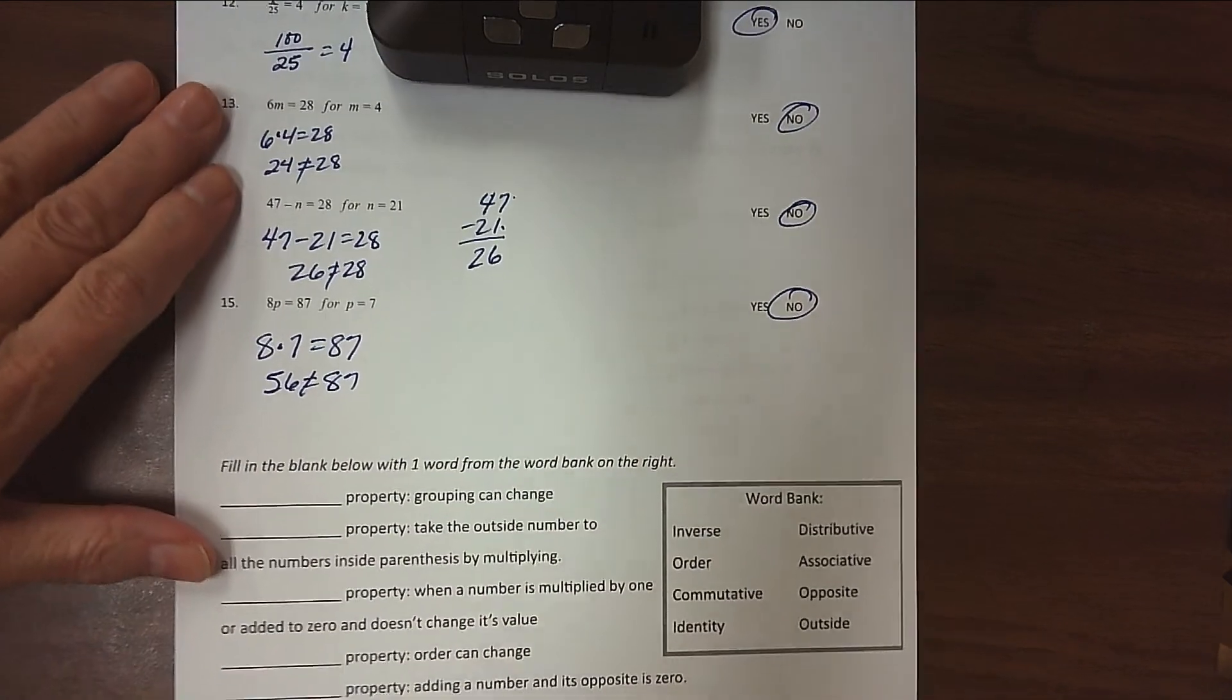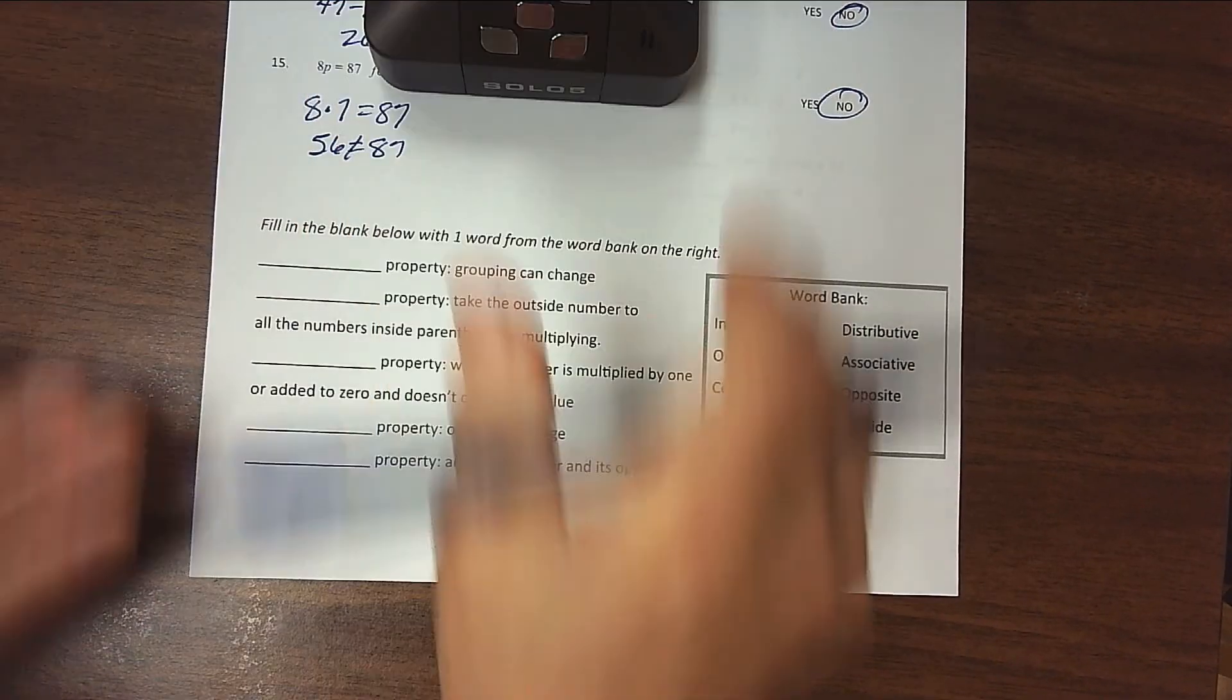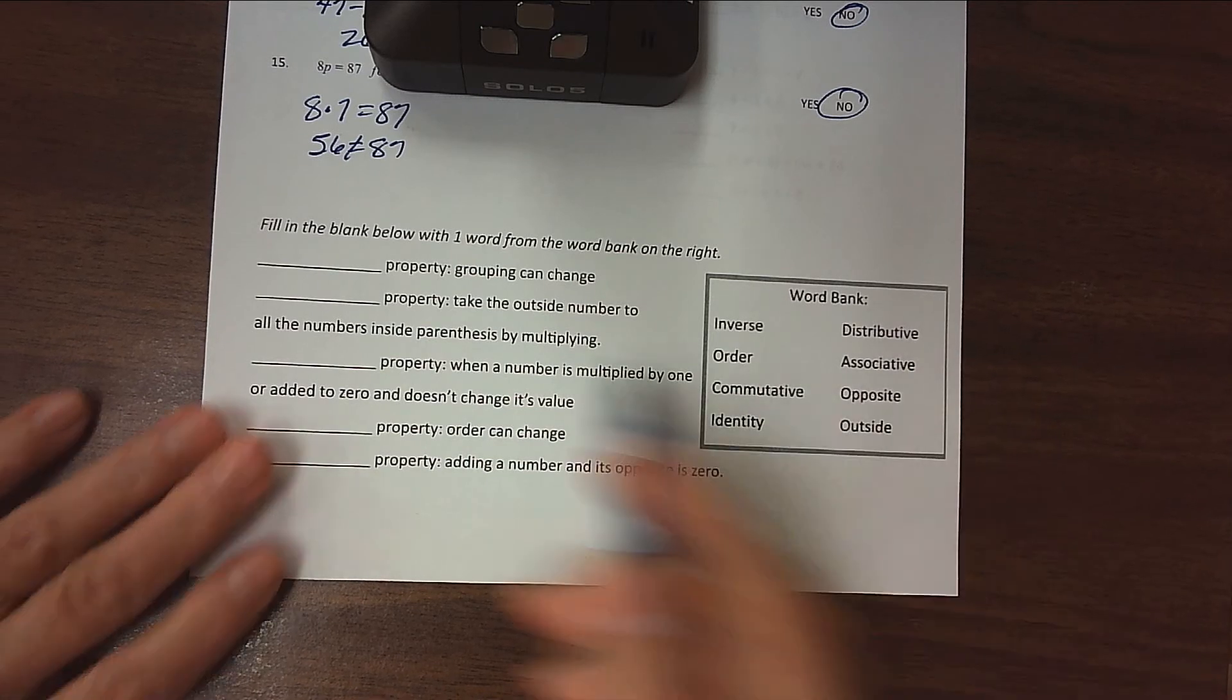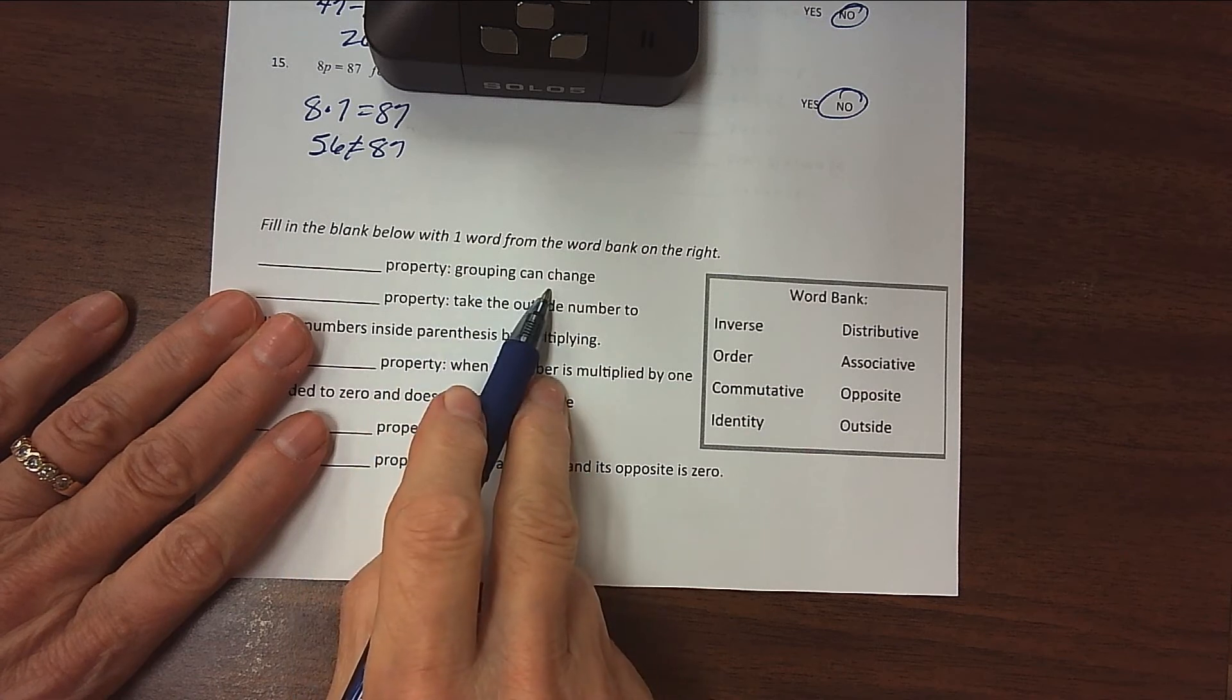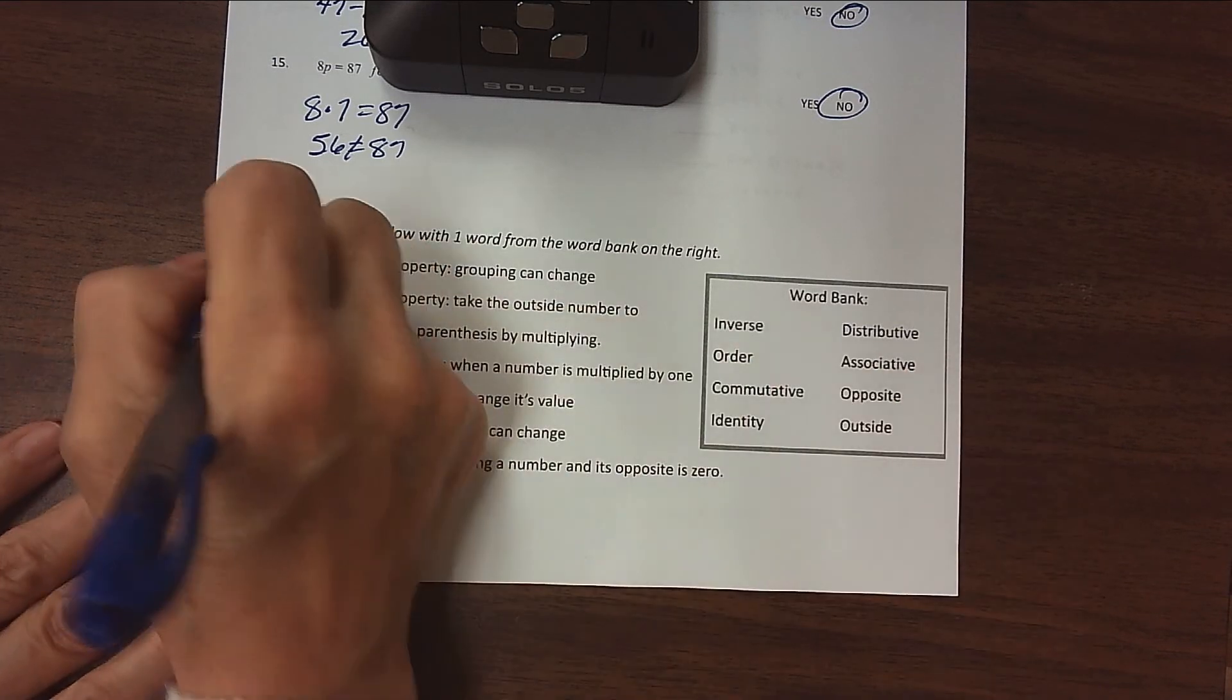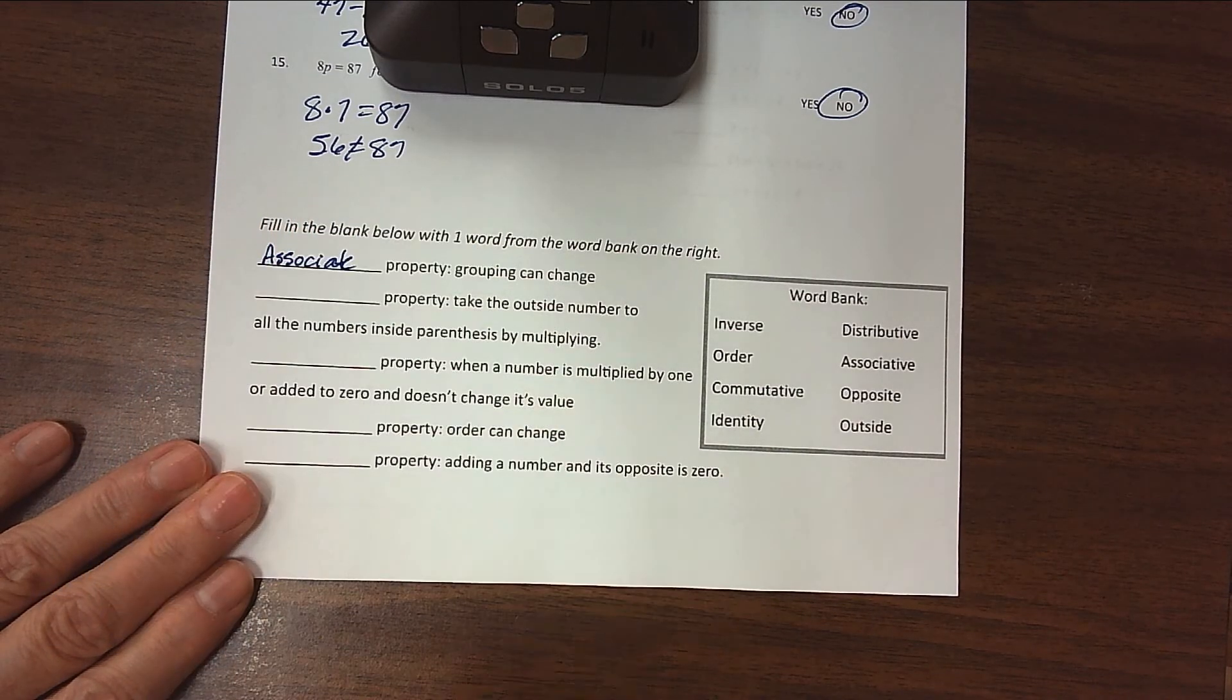Alright, we're moving into our properties now. For this first section, we're going to fill in the blanks with the correct word from the word bank. Which property is it where the grouping can change, where the association can change? That's the associative property. Associative property is where we can change our grouping.